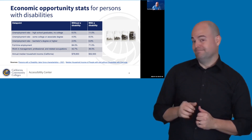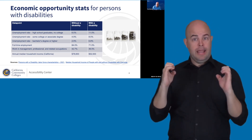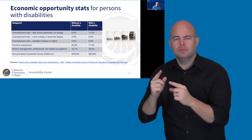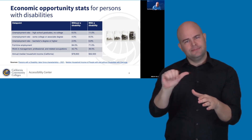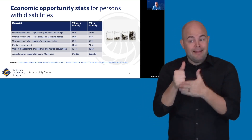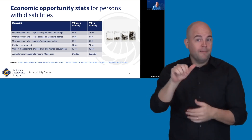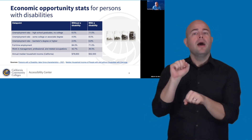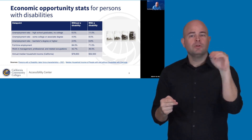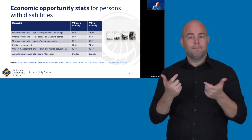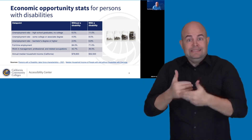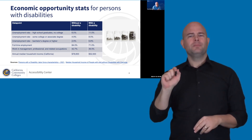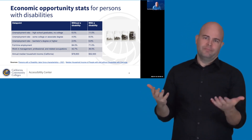As you increase educational attainment, it has a big impact on all groups, but especially for people with a disability. If we can help our students succeed in the community college — get their associate degree or certificates — their unemployment rate drops from 11% down to 8.5%. If they go on to a bachelor's degree or higher, their unemployment rate drops further to 6.8%.